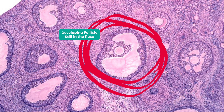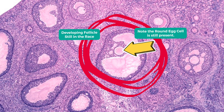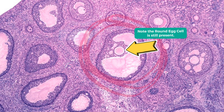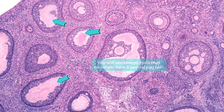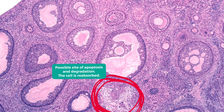You might be asking: what happens to all of those other follicles, all those other cysts, if there's only one egg ovulated each month? Well, these other ones basically stop. They go through a process called atresia, which is just cellular death. Eventually they will shrink and disappear entirely, and those eggs that were in there are lost forever.